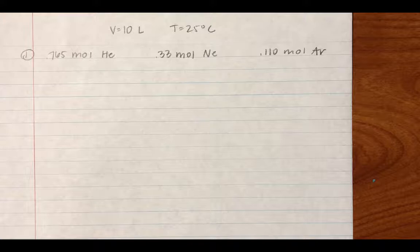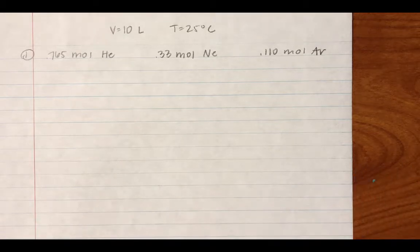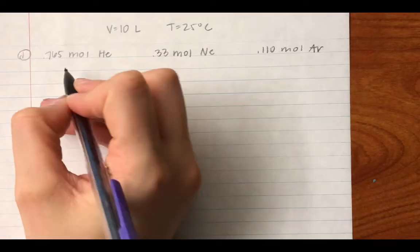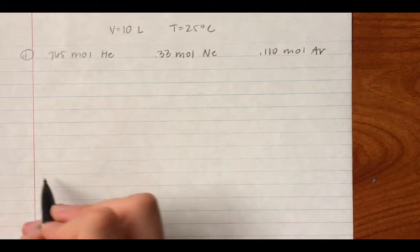So this Do Now question gave us a mixture of gases and wants us to calculate the partial pressure of each as well as the total pressure of the entire thing. There's actually two ways that you can go about this question. The first way is you can use the ideal gas law to individually solve for each of these partial pressures. I'm going to show you both ways.